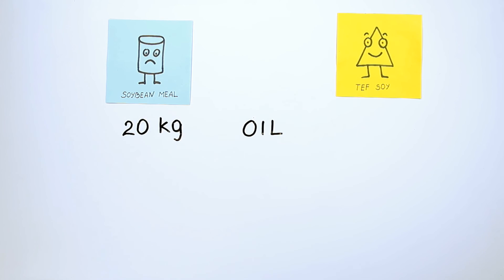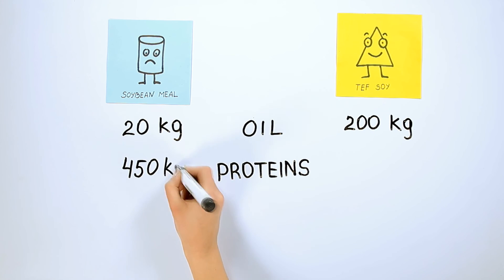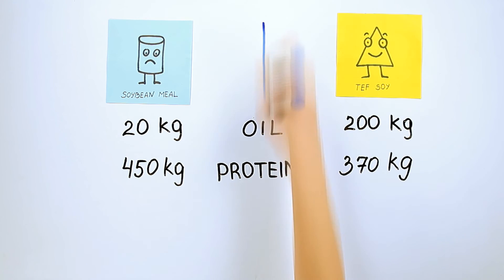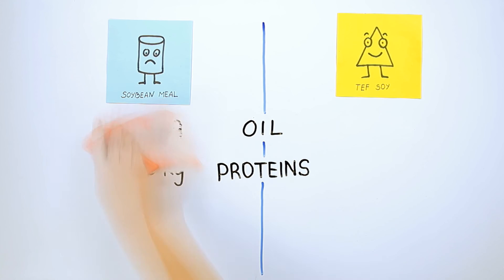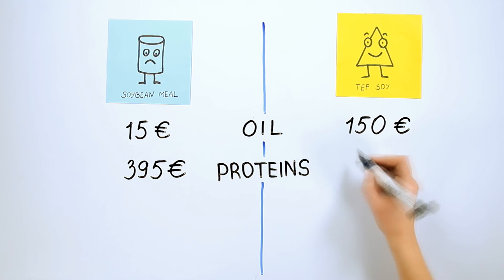Now we shall calculate what you gain with the purchase of 1 tonne of meal and TEF soybean. Oil: soybean meal total 20 kg, TEF soy total 200 kg. Protein: soybean meal total 450 kg, TEF soy total 370 kg. And the money equivalent you pay: Oil soybean meal total 15 EUR, TEF soy total 150 EUR. Protein soybean meal total 395 EUR, TEF soy total 280 EUR.